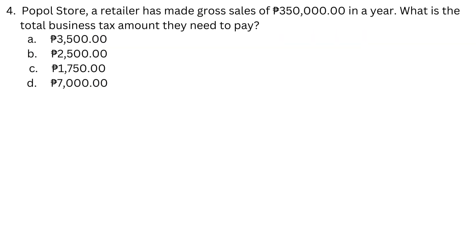Question 4. Popole Store, a retailer, has made gross sales of $350,000 in a year. What is the total business tax amount they need to pay? a. $3,500. b. $2,500. c. $1,750. d. $7,000.